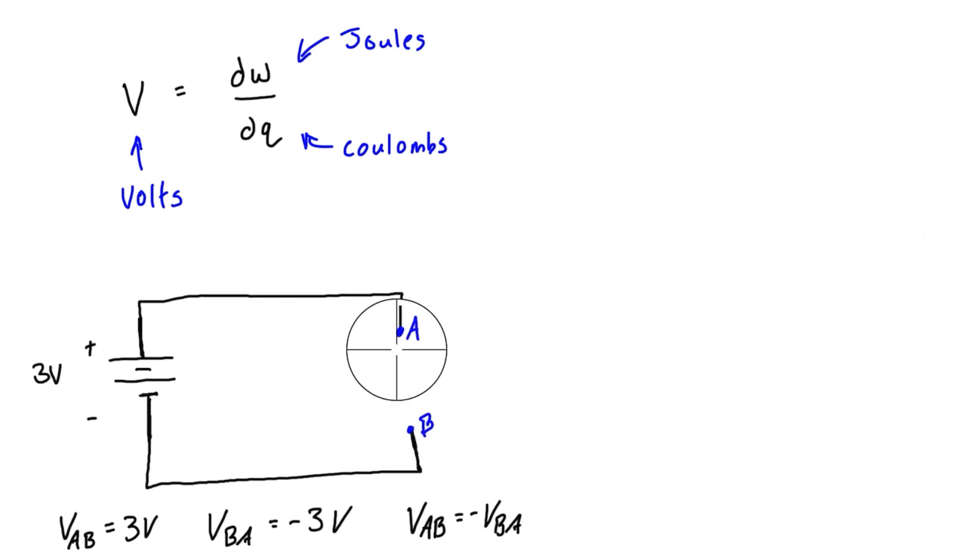This voltage drop exists whether the circuit is connected or not. Right now it's an open circuit because there's a break, but you could connect it with a resistor that we draw with a zigzag line. When we connect it with a resistor, current is able to flow. We consider positive current to flow from the positive terminal to the negative terminal.